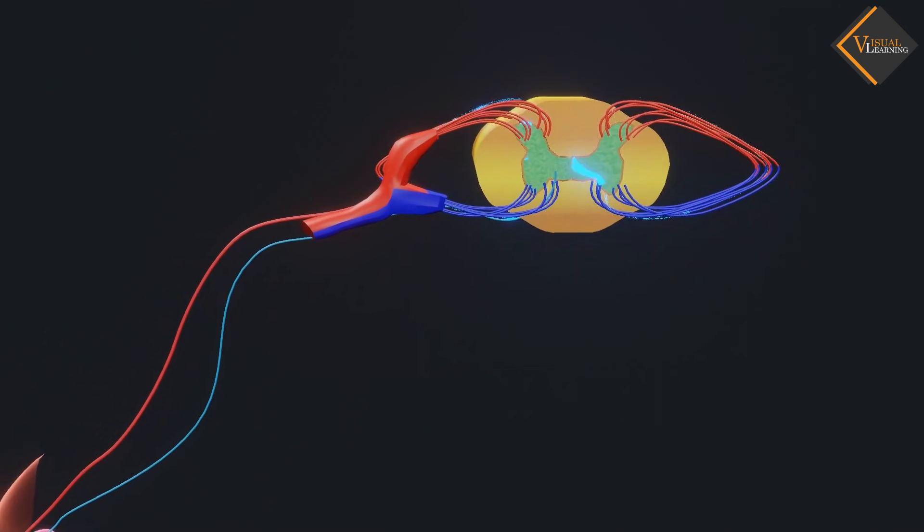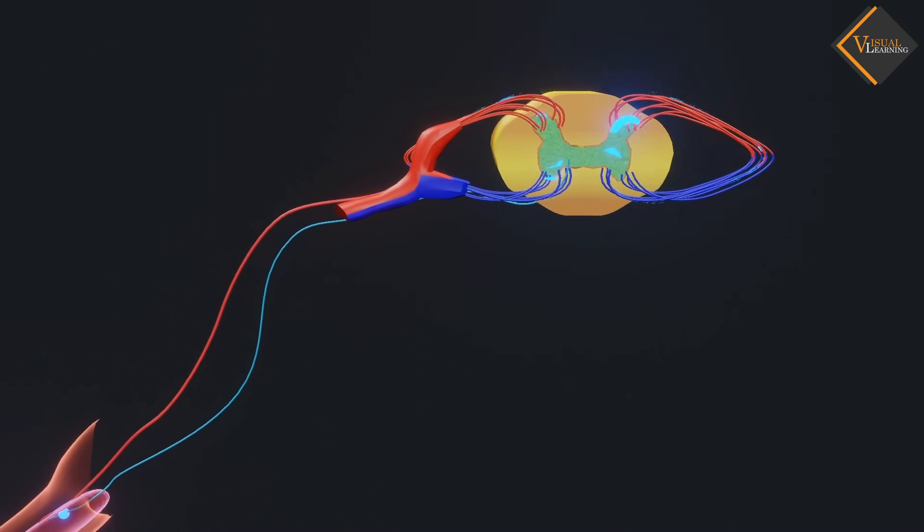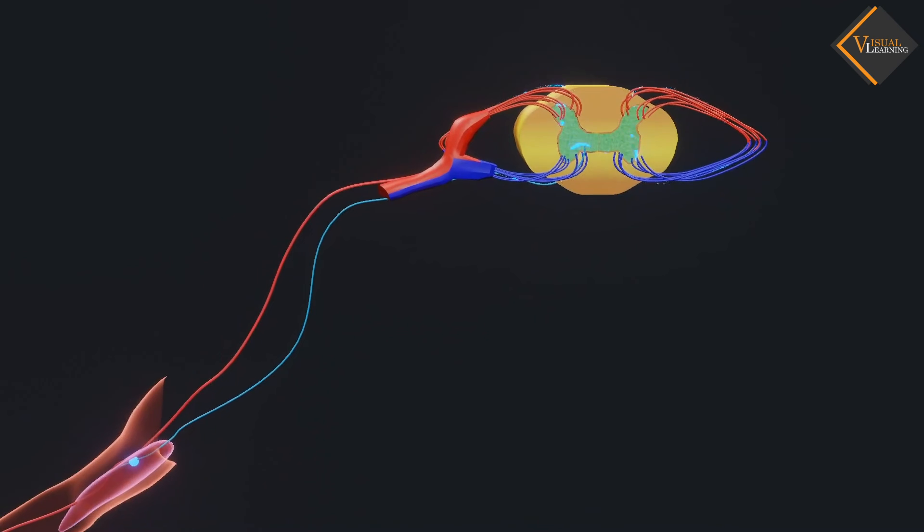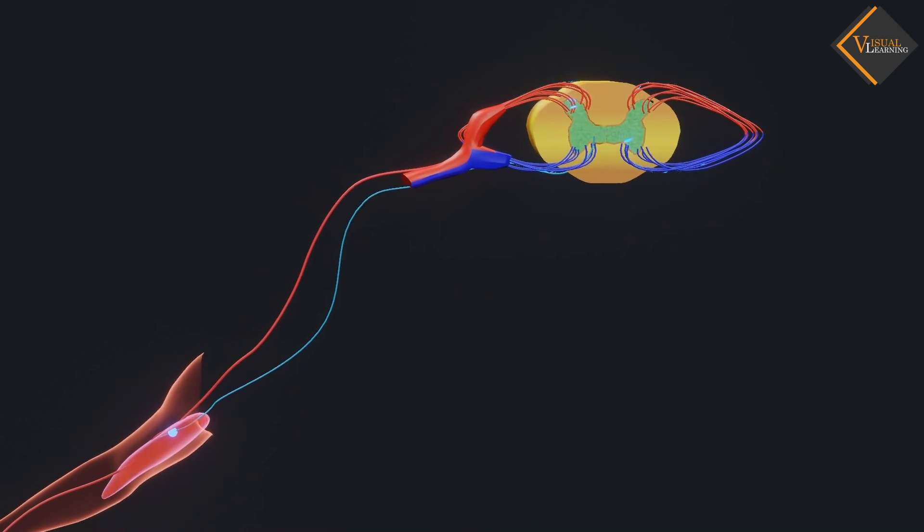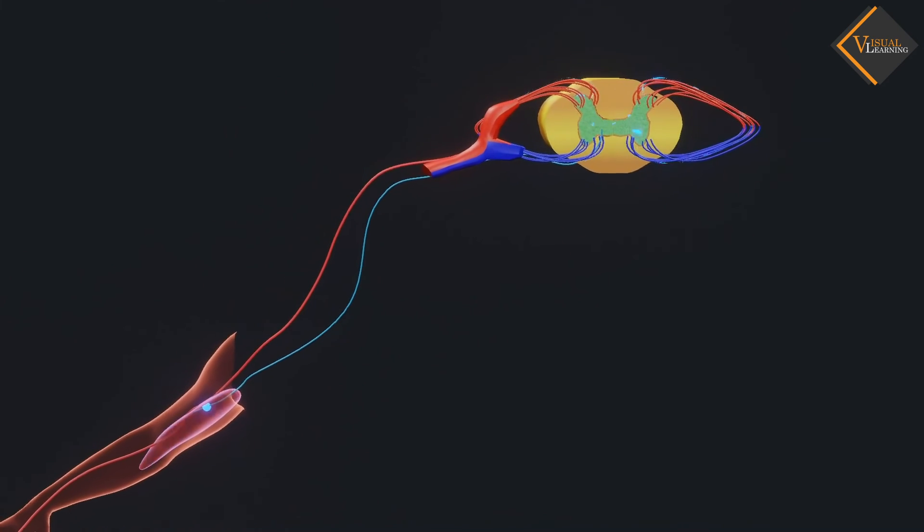Immediately, the spinal cord sends back signals to the muscle through the motor neuron. The muscles attached to the sense organ move the organ away from danger.